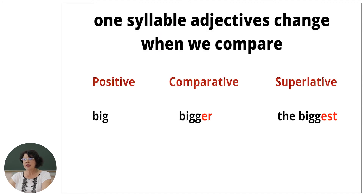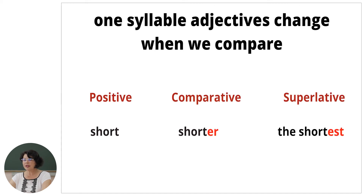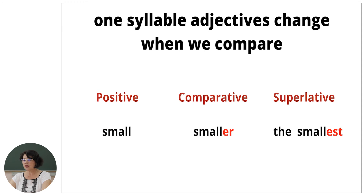One-syllable adjectives change when we compare. Be attentive, please. We have three degrees of comparison: positive, comparative, and superlative. One-syllable adjectives change — look and see: big, bigger, the biggest. Another example: short, shorter, the shortest. Small, smaller, the smallest.